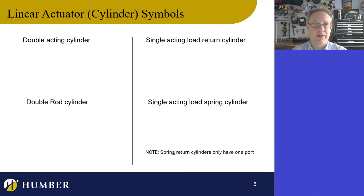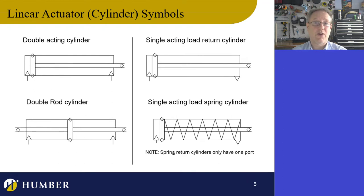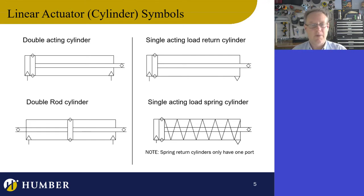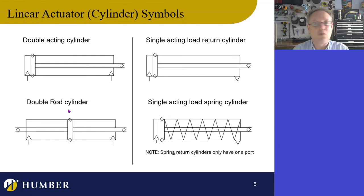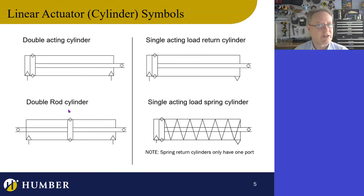Now let's look at the four different types of linear actuators we'll focus on in this course. First is the double-acting cylinder — the standard actuator we'll use in labs. If I put air in one way it retracts, the other way it extends. I can control both the extension and retraction force, and even the speed. Second is the double-rod cylinder — same application but with two rods. It's a rarer design but useful for specific applications where you need precise force control in both directions.